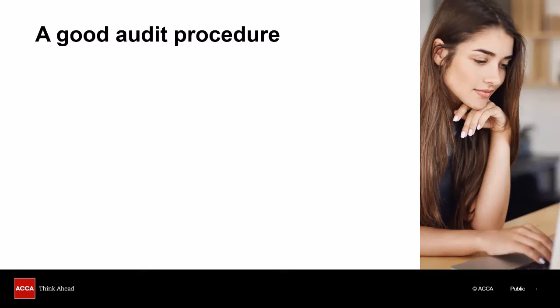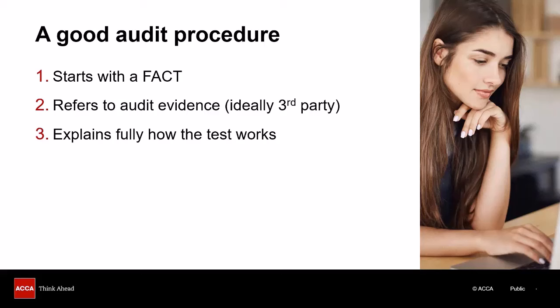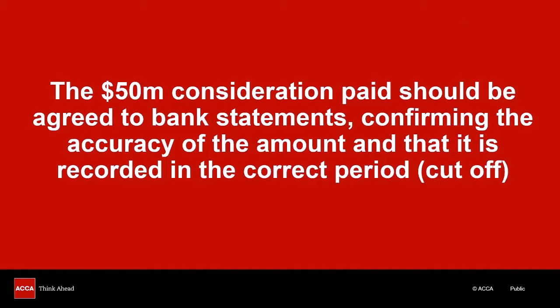Let's bring this to the exam. When writing a good audit procedure, it has to start with a fact from the scenario — something you are trying to verify — and you have to refer to the audit evidence you are going to suggest. Ideally it's third-party evidence, because that's more reliable. Just relying on what management tells you, like relying on Boris when he's biased and trying to get off charges, is not reliable evidence. You can't just trust management. Critically, you have to give enough detail. The verb in an audit procedures question is usually 'describe,' which means you must set out in detail how the test works.